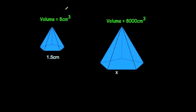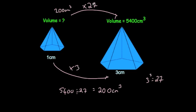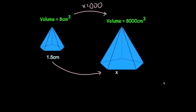The volume of the smaller one is 8 centimeters cubed and the volume of the larger one is 8,000 centimeters cubed, so the volumes are 1,000 times bigger. To find the scale factor of enlargement for the sides, we cube root this. The cube root of 1,000 equals 10, which means the sides are 10 times bigger. So if we times the smaller side of 1.5 by 10, we get 15 centimeters.